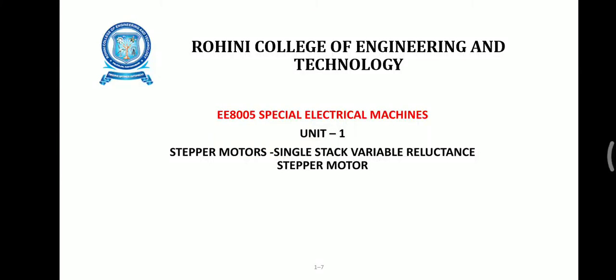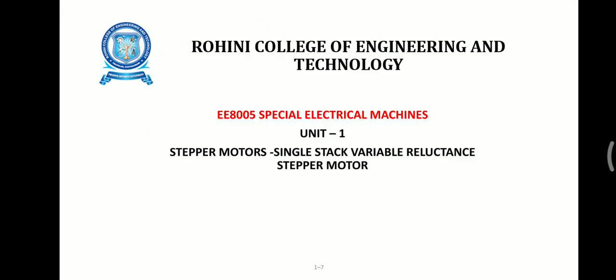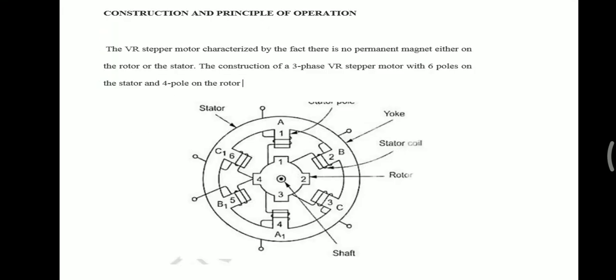Welcome to the course E8005 Special Electrical Machines, Unit Number 1, Stepper Motor, Single Stack Variable Reluctance Stepper Motor. Here we are going to see the operation of the single stack variable reluctance stepper motor and its construction. You can see it from the diagram. The variable reluctance stepper motor is characterized by the fact that there is no permanent magnet.